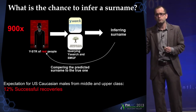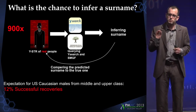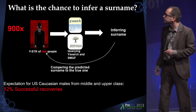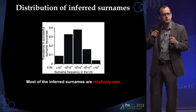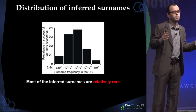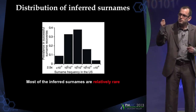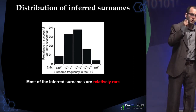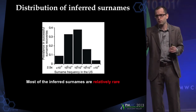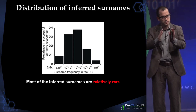We found that for US males with Caucasian ancestry, middle and upper class, we expect a 12% chance of correctly recovering a surname using this process. We were concerned we might just be getting very common surnames like Smith, Williams, or Jackson — millions of people share those. But in fact, the surname in most cases was a strong identifier: we were recovering mostly rare surnames found in about one in 4,000 individuals in the US. So knowing the surname narrows you from 150 million males down to just 40,000.